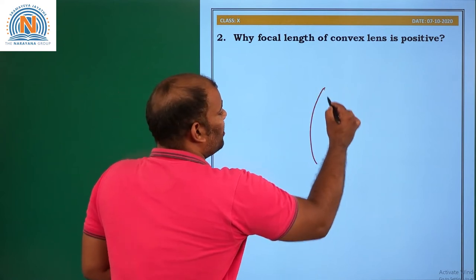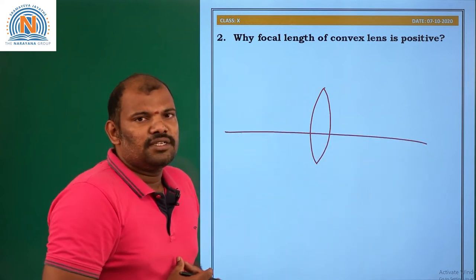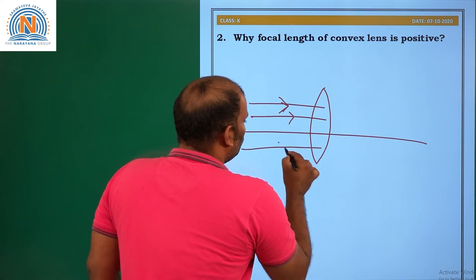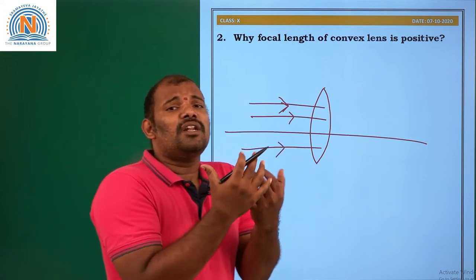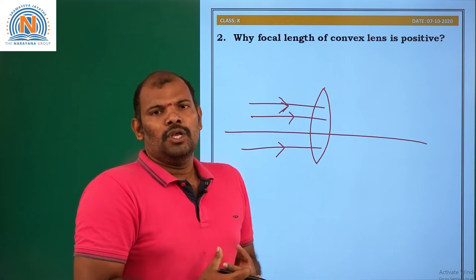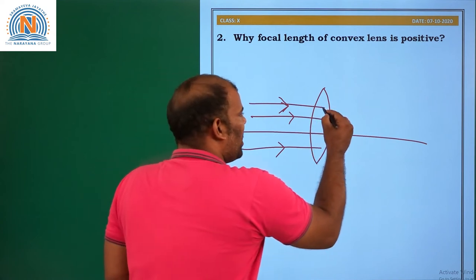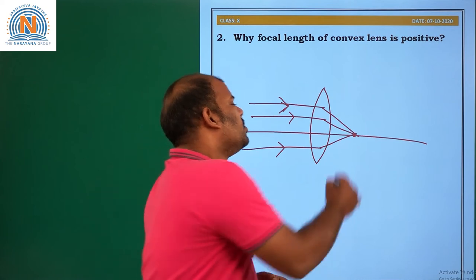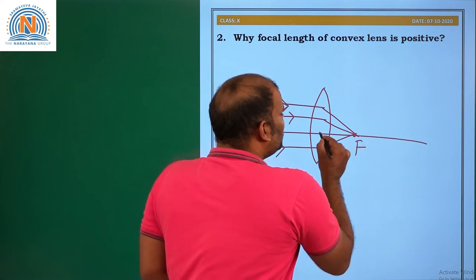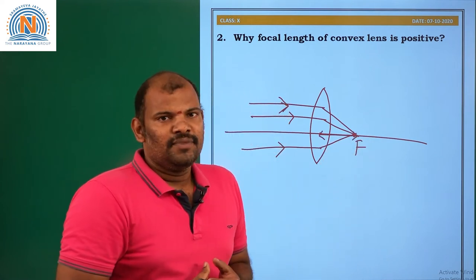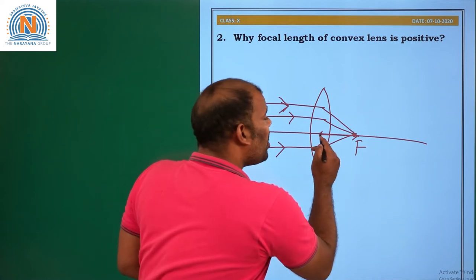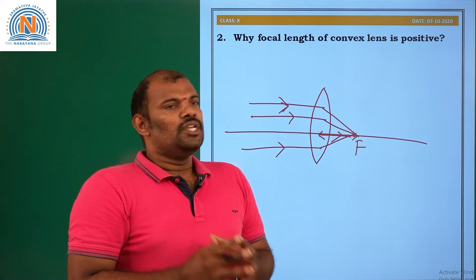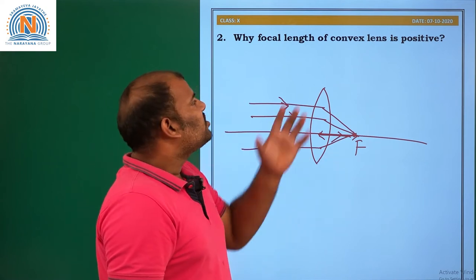Let us see with the help of a diagram. This is a convex lens, and I am sending a parallel beam of rays. When you send parallel beam of rays, after refraction they will converge at a point. That point is called the focus. The distance from pole to focus is called focal length. We are measuring the focal length in the direction of the incident ray, so that is why focal length is positive in the case of a convex lens.